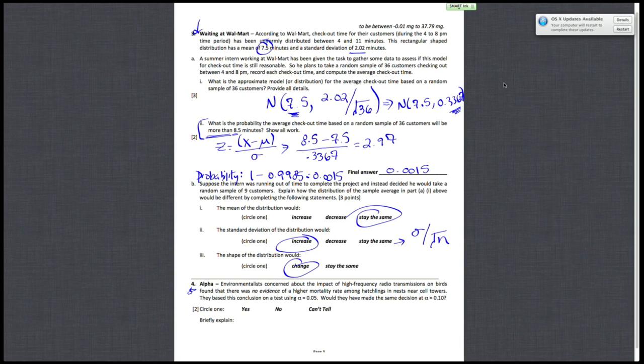Would they have made the same decision at alpha equals 0.1? So if the researchers are saying that there's no evidence of a higher mortality rate amongst hatchlings, then they're failing to reject H-naught, which means that their p-value is greater than 0.05. However, even though we know that it's greater than 0.05, we don't know how much greater it is than 0.05. So we don't know if it's also greater than 0.1. So since we don't know if the p-value is greater than or less than 0.1, we can't tell.